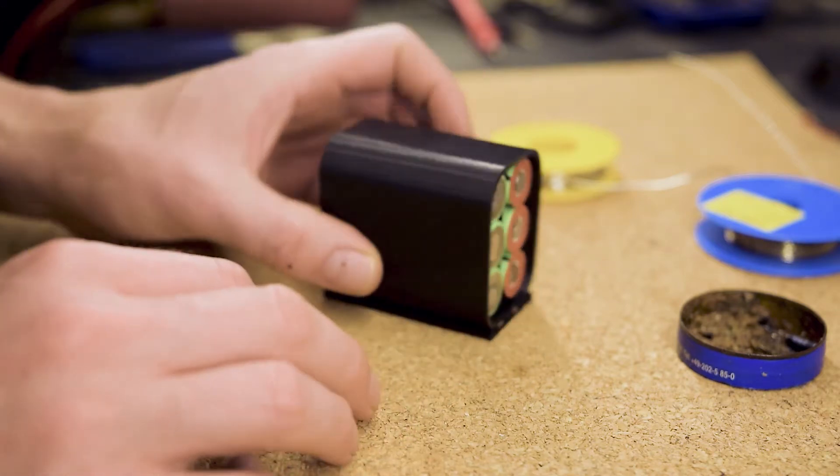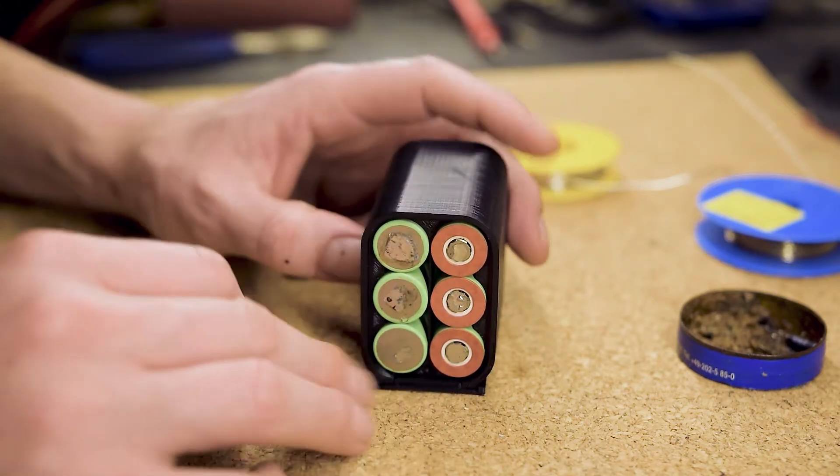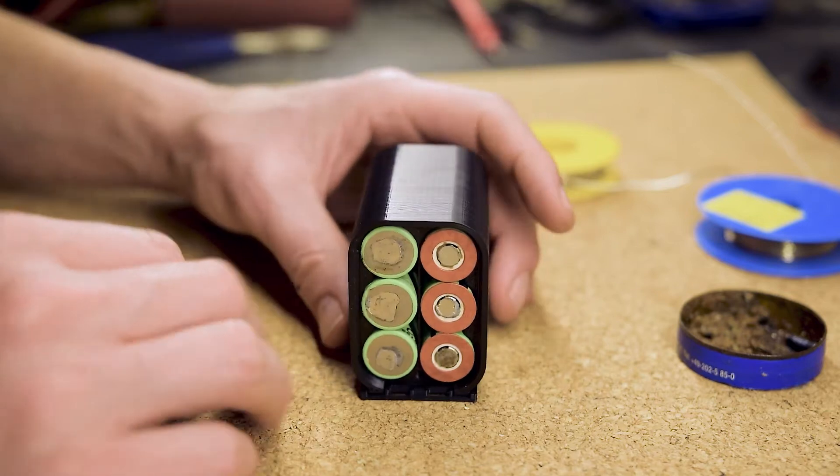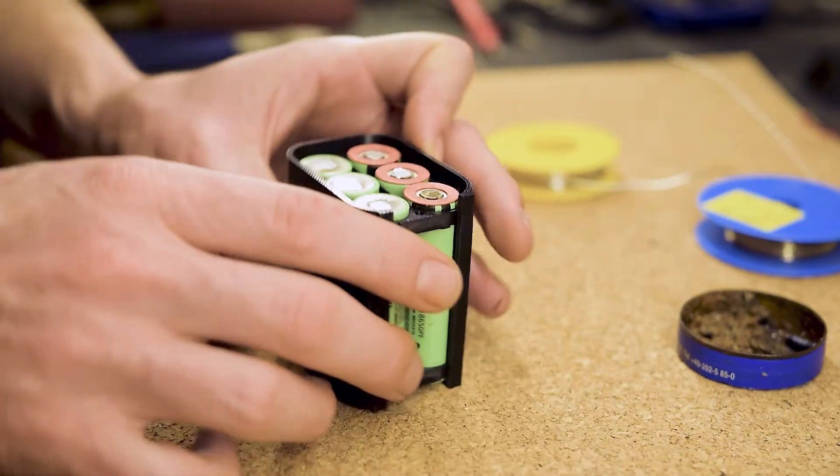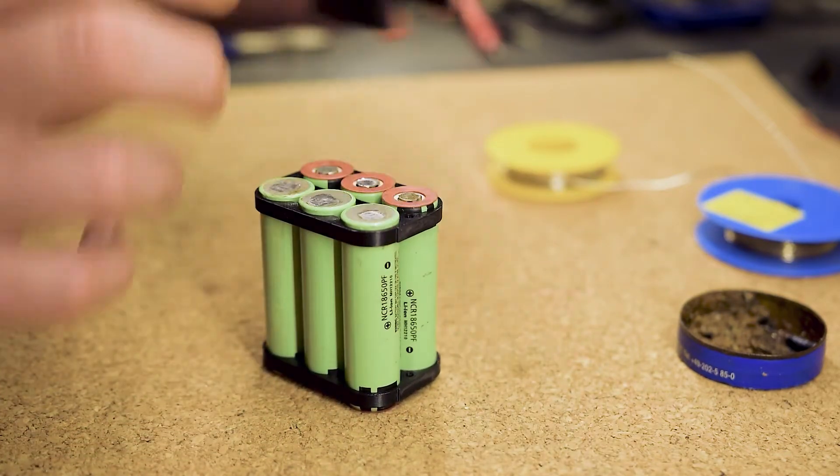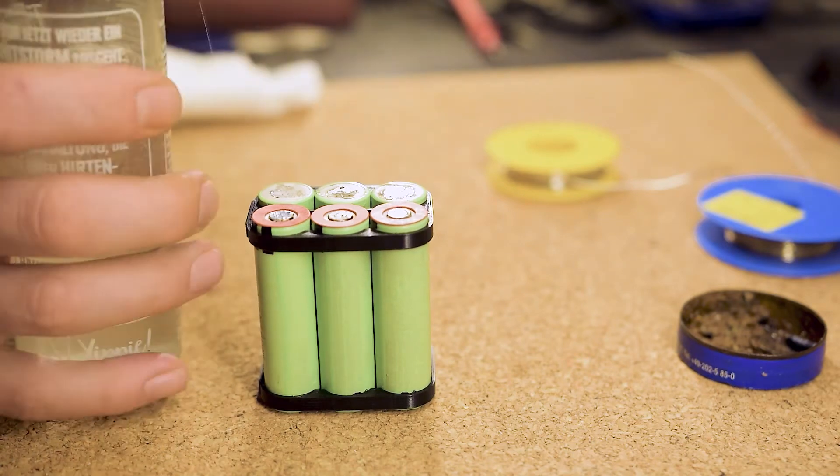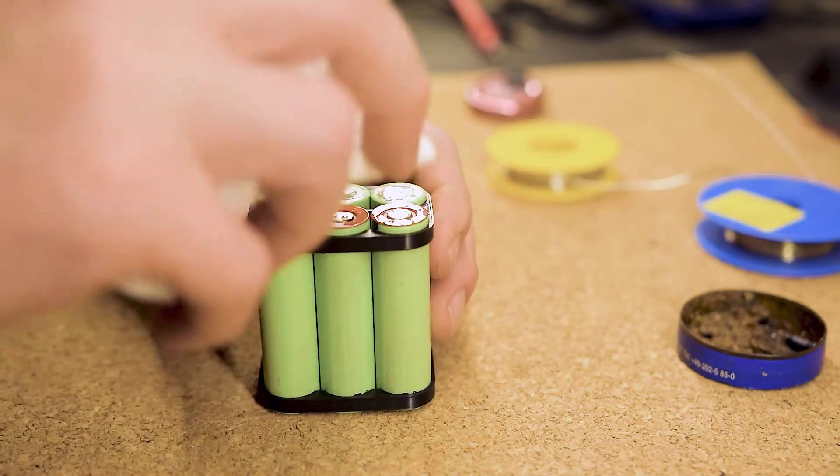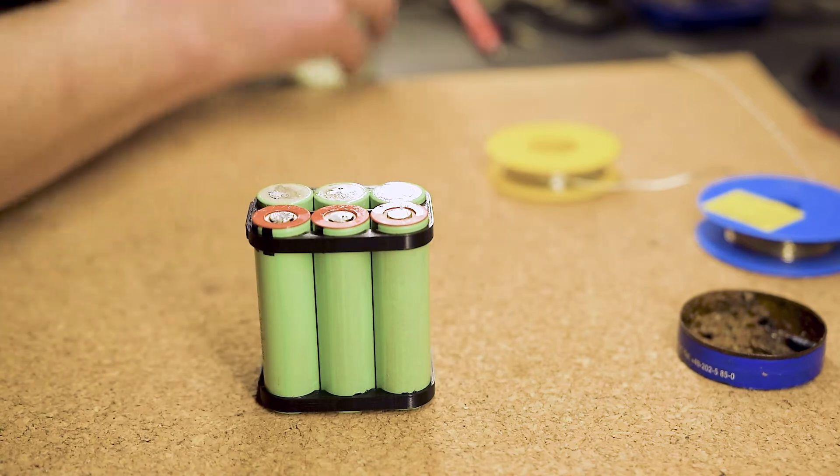The cells on the right side must show their positive terminal, the left side is the negative terminal. For the purpose of soldering, we extract the cells with the battery holders from the case. Cleaning the contacts is always a good idea, no matter if the cells are new or used ones.